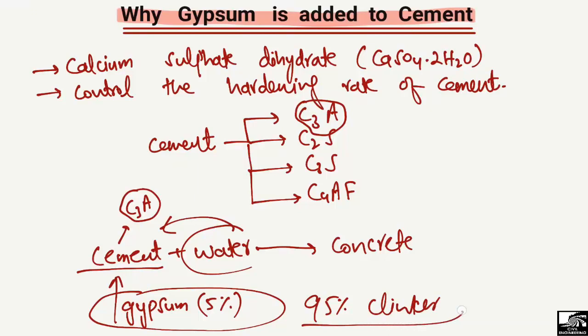Clinker is the main component of cement — ninety-five percent clinker and five percent gypsum. The reason for adding gypsum is to reduce the hardening rate of the cement caused by C3A, tricalcium aluminate. So gypsum reduces this hardening rate and increases the initial setting time of the cement.